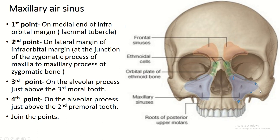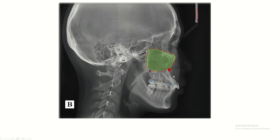The second bony landmark is the junction between the zygomatic process of the maxilla and the maxillary process of the zygomatic bone. The third point is on the alveolar process just above the third molar teeth, and the fourth point is on the alveolar process just above the second premolar teeth.